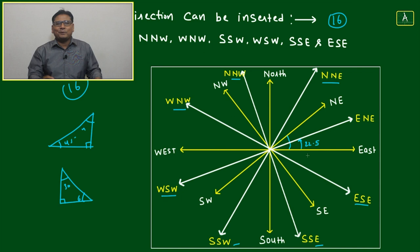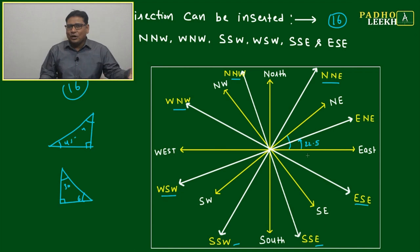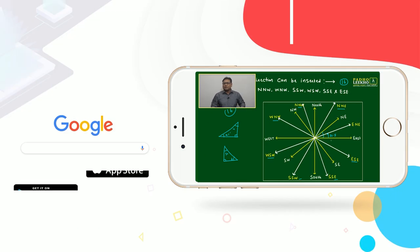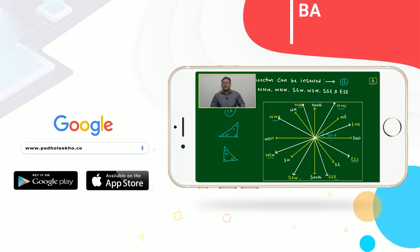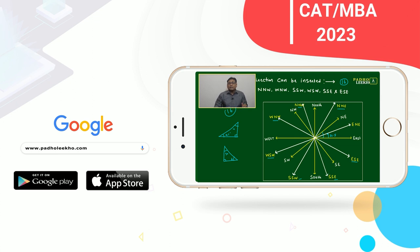Nobody remembers tan(22.5°), and for aptitude purposes you shouldn't need to. This is especially true from an aptitude exam perspective. However, if you are preparing for IIT-JEE or 12th board exams, then you must know how to find tan(22.5°).